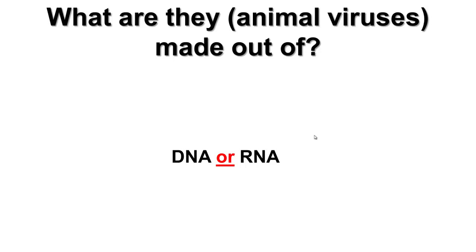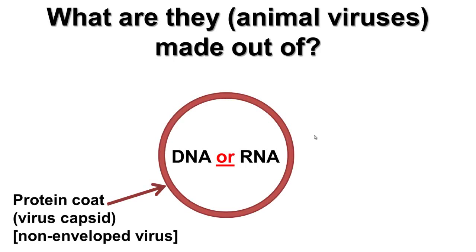Viruses will always have either a DNA or RNA genome — never both. As of today, viruses will only have RNA or DNA genomes. What is covering the genome is called a protein coat, or officially, a virus capsid. So we have the genetic material inside a protein shell or capsid. Some viruses, that's all they are — just genetic material inside and a protein coat. These viruses are called non-enveloped viruses — structurally the most basic.